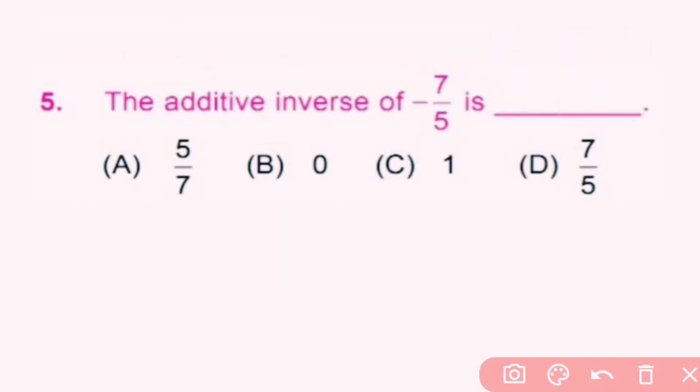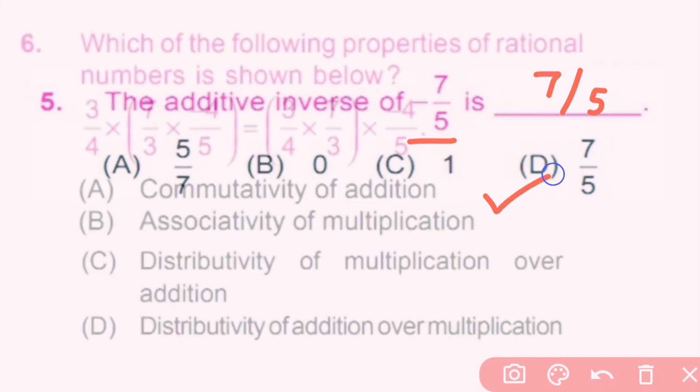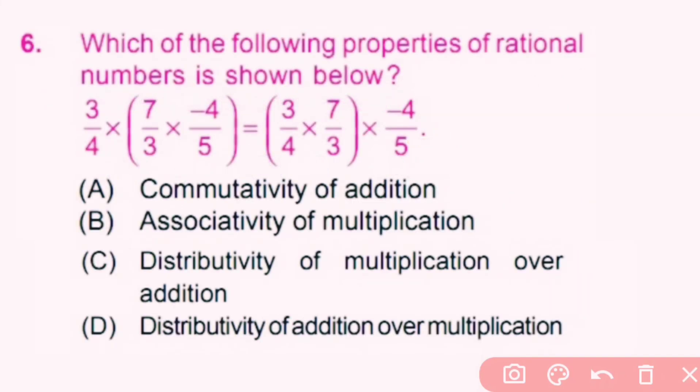Question 5: The additive inverse of −7/5. The sign will change, so the additive inverse of −7/5 is 7/5. Option D is the correct answer.